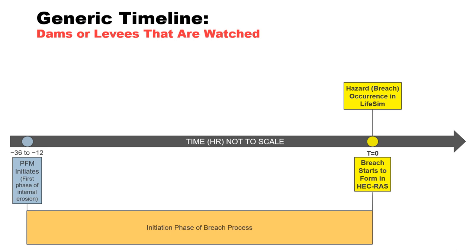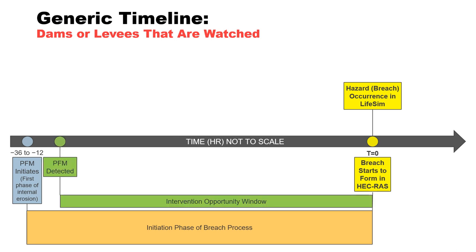The timeline begins with failure mode initiation — for example, observed material movement suggests a pipe has initiated and is progressing towards the reservoir. This defines the beginning of the initiation phase of the breach process. For this example, it is shown occurring 36 to 12 hours before the breach starts to form, and therefore represented as negative values. Assuming adequate training and surveillance, the failure mode is likely to be detected shortly after it initiates if the seepage or leakage exit is observable.